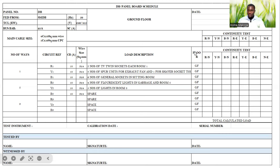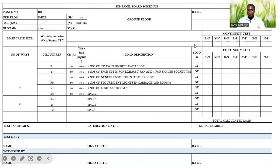We move to the continuity test section. We start first with the main incoming cable. We have R and N (phase and neutral) — in this case it's a three-phase supply with R, Y, B, neutral, and CPC or circuit protective conductor, which is the earth conductor. We test between R and N, Y and N, blue phase and N. Then we test between red phase and earth, yellow phase and earth, blue phase and earth, and neutral and earth — that covers the main incoming cable. We then move to the outgoing cables, testing between R1 and neutral, Y and neutral, B and neutral, R and earth, Y and earth, B and earth, and neutral and earth.